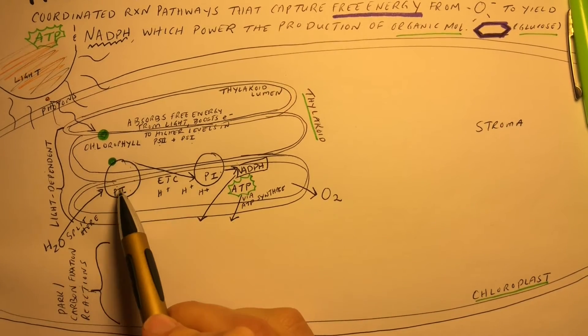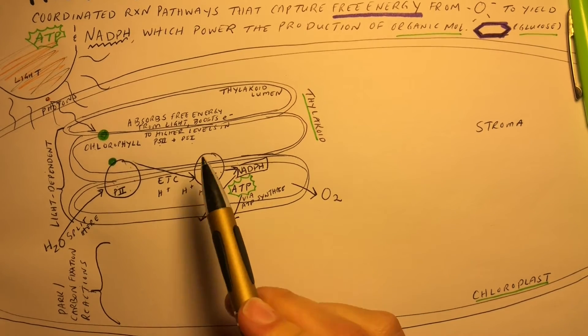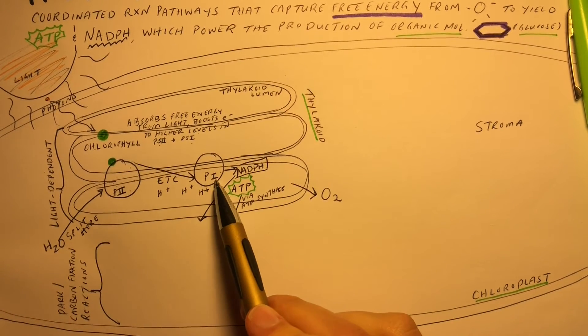Keep in mind that photosystem 2 comes first, then photosystem 1. It seems out of order, but photosystem 1 was discovered first.